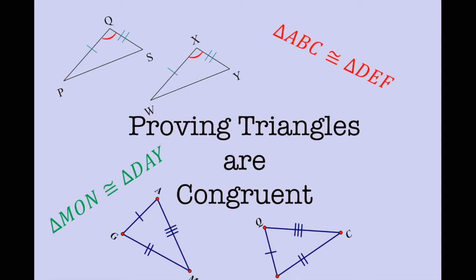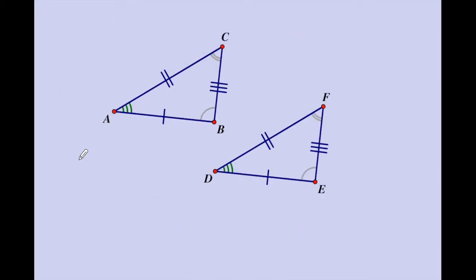In today's video, we are going to discuss different methods of proving triangles congruent. In geometry, we need to prove that all the parts are equal of each figure in order to say that they are congruent. So a triangle has six parts — it has three sides.